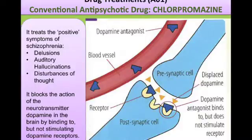The postsynaptic cell has receptors that grab the dopamine and draw it into the cell. If you've got too much dopamine, we need to reduce that. Chlorpromazine works using dopamine antagonists — the blue things you can see in the diagram — which bind to but do not stimulate the receptors, effectively blocking some of them. This reduces dopamine activity and stops the auditory hallucinations, disturbances of thought, and other positive symptoms.